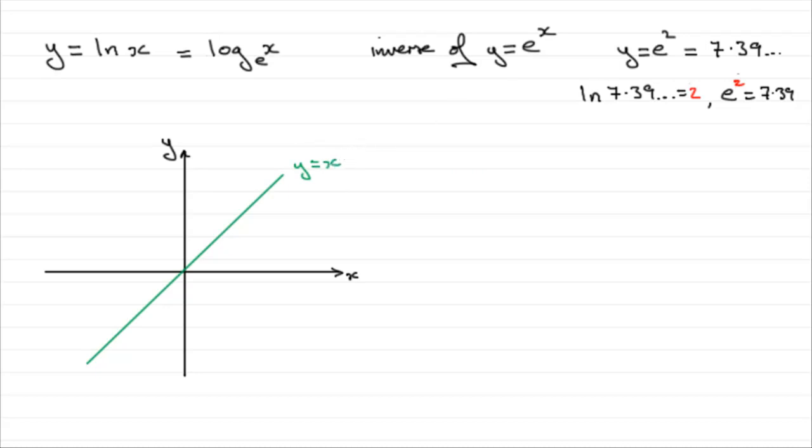Now if we take the graph of y equals e to the power x, then we've seen earlier that that's a graph that doesn't touch the x axis, but gradually works its way up like this, cuts here at 1, and then goes shooting off up here. Let's just mark that in as 1. The x axis, or the equation of the line y equals 0, is an asymptote for the graph of y equals e to the power x. And this graph tends to infinity up here.